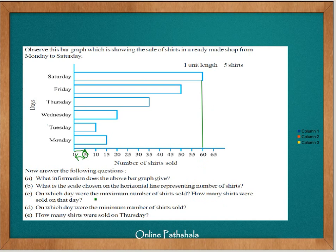On which day were the minimum number of shirts sold? The shortest bar is on Tuesday, so the minimum number of shirts were sold on Tuesday — just 10 shirts. For a more specific question: how many shirts were sold on Thursday? The bar for Thursday is coinciding with 35, so 35 shirts were sold on Thursday.